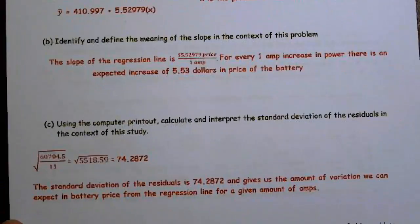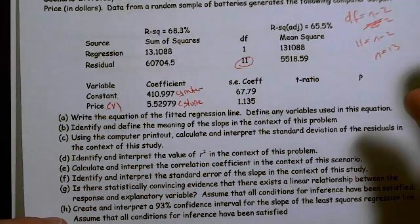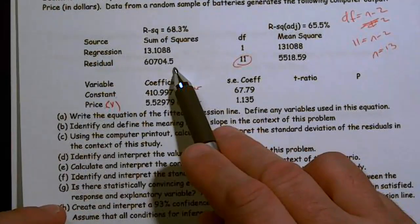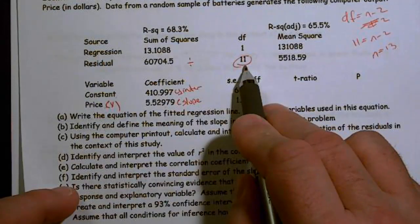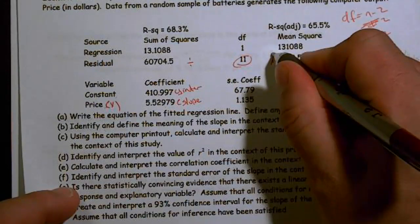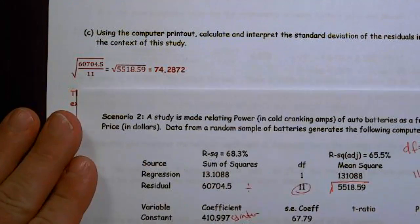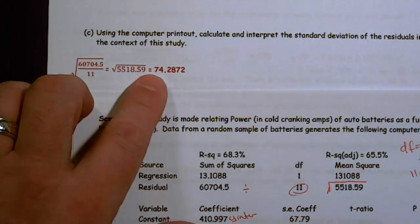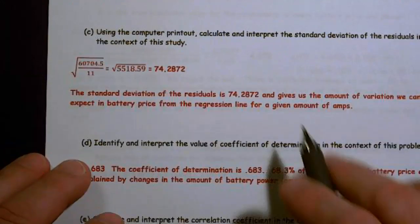The next thing says using the computer printout, calculate and interpret the standard deviation of the residuals in the context of the study. Well, basically, I take the sum of the squares, this value, divided by the residual degrees of freedom, which gives me this. Then I take the square root of that. And that is what I show right here. And I end up getting 74.287 when I take the square root of that.